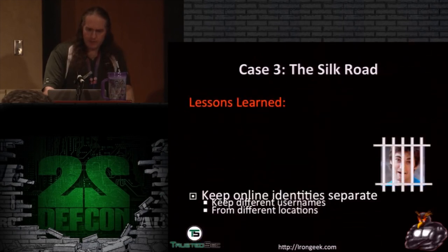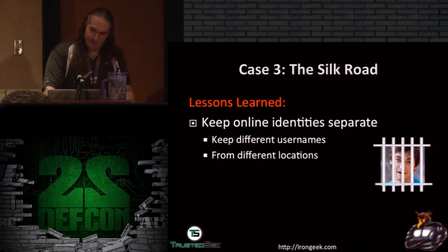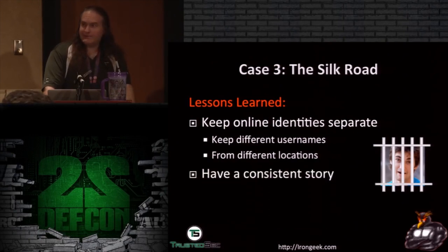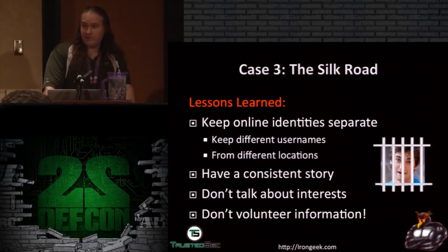Lessons learned from Silk Road: Keep online identities separate. If he hadn't used Tor from the same locations he was logging into Gmail, that would have helped. Not using the same handles in multiple places would help. Having a consistent story matters. Don't talk about your interests publicly. Don't volunteer information — there's no reason why he should have mentioned that hypothetically you could buy things on Silk Road.